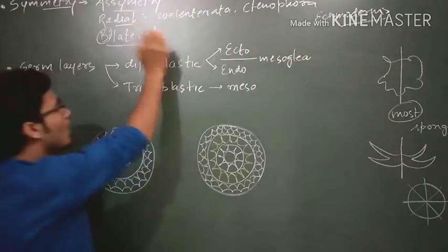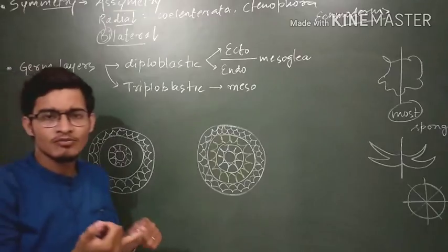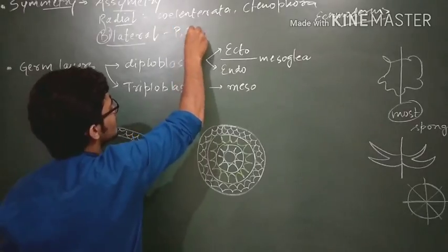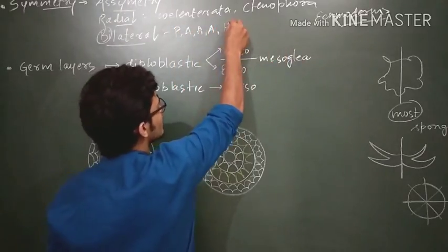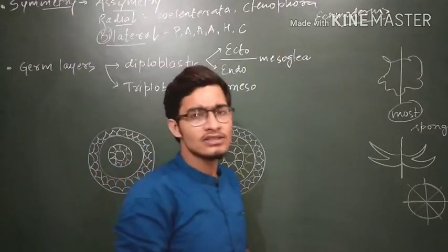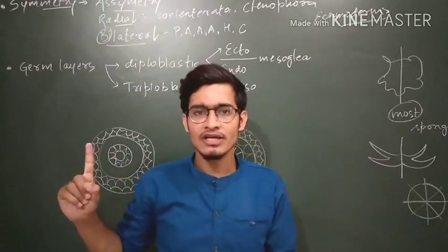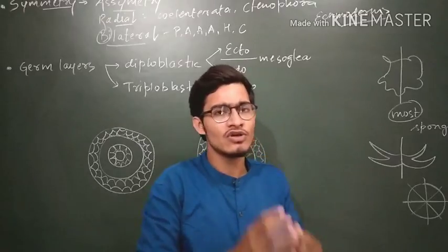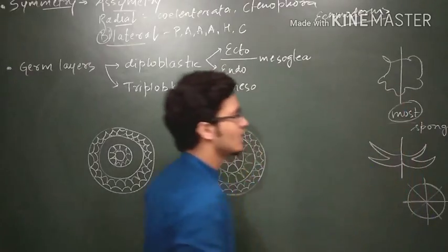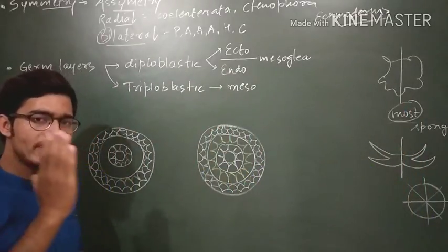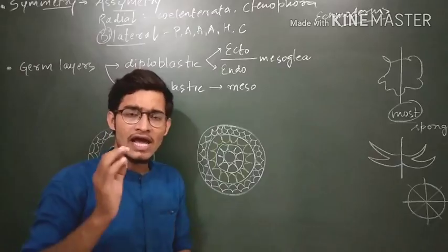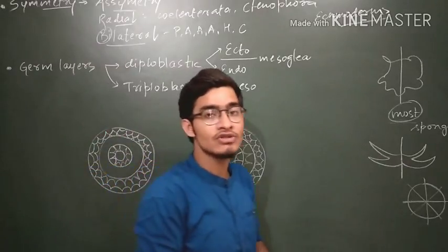Except all these, all other animals are bilaterally symmetrical. So we are done with Porifera, Cnidaria, and Ctenophora. Here, Platyhelminthes, Aschelminthes, Annelida, Arthropoda, Echinodermata, Hemichordata, and Chordata — all these are proper examples of bilaterally symmetrical organisms. To summarize: in asymmetric organisms, no plane can divide the individual into two equal halves — that is most sponges. Bilaterally symmetrical means only a single plane can divide the organism into two equal halves. Radially symmetrical means any plane passing through the center divides the individual into two equal halves.